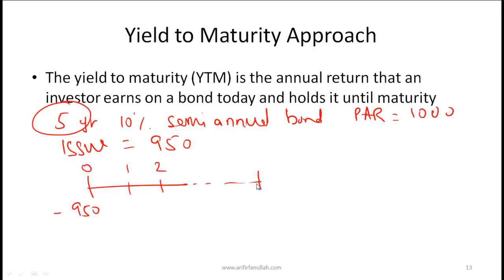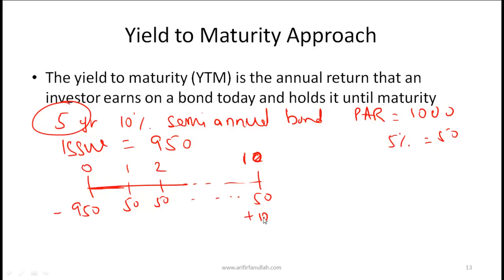With ten periods, the coupon payment the investor receives every six months is 5% of 1000 which equals 50. So the investor gets 50 every six months, and at maturity receives 50 plus the par value of 1000 back. To calculate the YTM, we first calculate the six-month yield using a calculator.